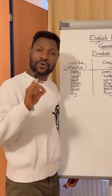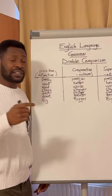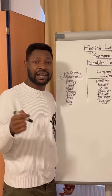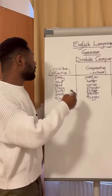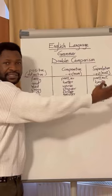Now, before we delve into double comparison, it is imperative that we look at what comparison is. Many a time, speakers do compare one person to another or one thing to another. And in doing so, basically, we use adjectives. So we have adjectives here. All these words here are adjectives. We have the comparative form and then the superlative.